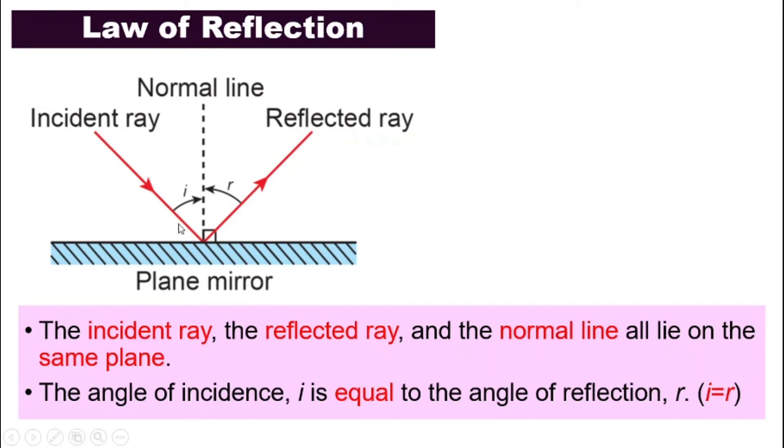That is wrong. It is between the incident ray and the normal line. This angle here is the angle of incidence. And the angle of reflection will be the one in between the normal line and also the reflected ray. So i refers to the angle of incidence, and r refers to the angle of reflection. They are the same, they are all of the same angle.